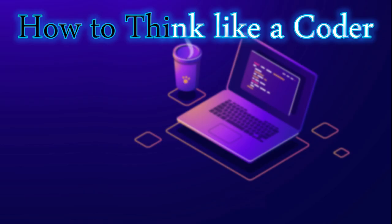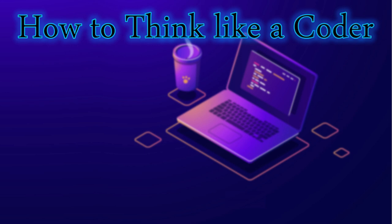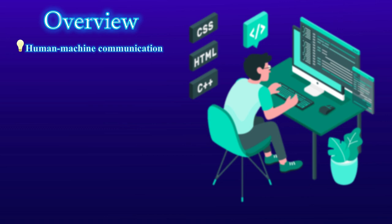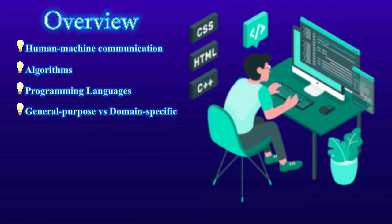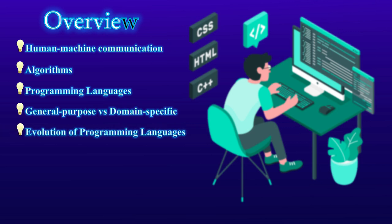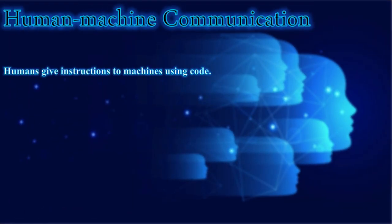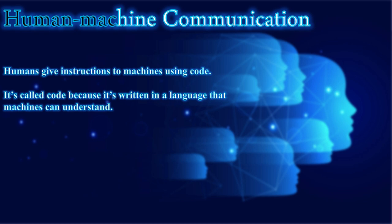In the previous video we talked about how to think like a machine. In this video we're going to talk about how to think like a coder. The overview covers: human-machine communication, algorithms, programming languages, general purpose versus domain-specific languages, evolution of programming languages, and programming in three steps.